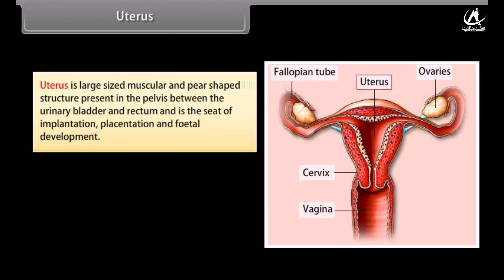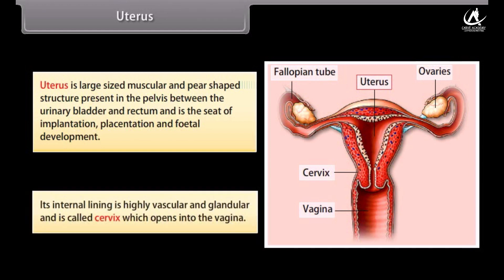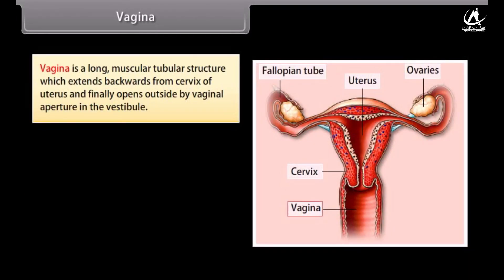The uterus is a large, muscular, pear-shaped structure present in the pelvis between the urinary bladder and rectum. It is the seat of implantation, placentation, and fetal development. Its internal lining is highly vascular and glandular. The cervix opens into the vagina. The vagina is a long muscular tubular structure extending backwards from the cervix of the uterus and opening outside by the vaginal aperture in the vestibule.